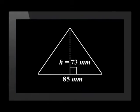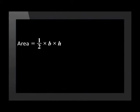Let's look at an example of working with a triangle. Here's a triangle with the length of the base equal to 85 millimeters and a perpendicular height of 73 millimeters. To work out the area of this triangle, we multiply the length of the base by the perpendicular height and also multiply it by a half. So we see half times 85 times 73, which is 3,102.5 millimeters squared.